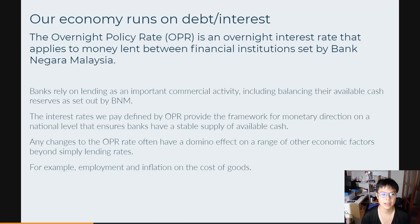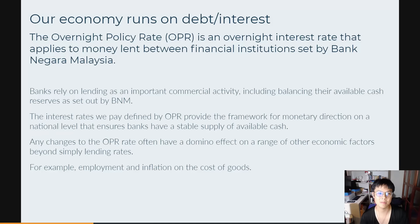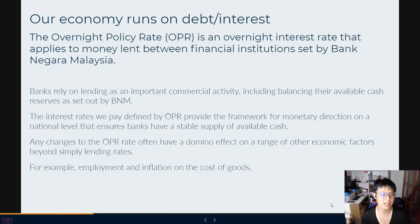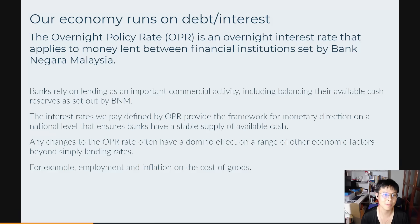What I mean by running on debt as an economy is: as consumers, we buy stuff, and to buy expensive stuff we need to take out loans for our homes, we spend with our credit cards, we travel and transact overseas. All these are some of the ways that banks earn money — through debt, they earn an interest on that debt. That's one of the ways they make money, though there are many others.